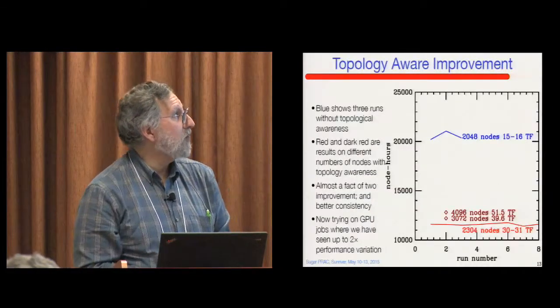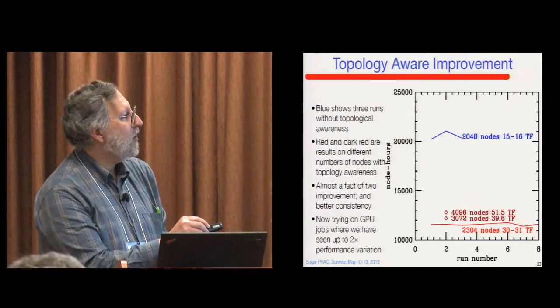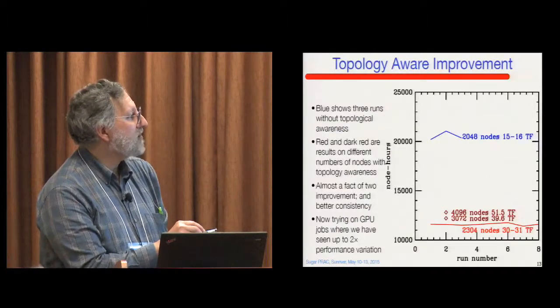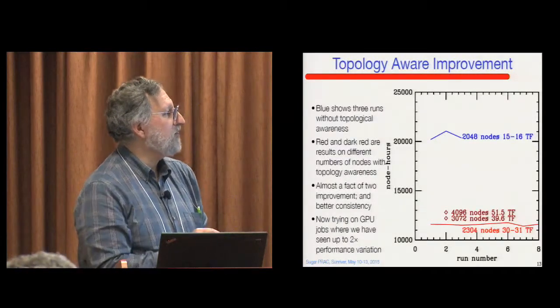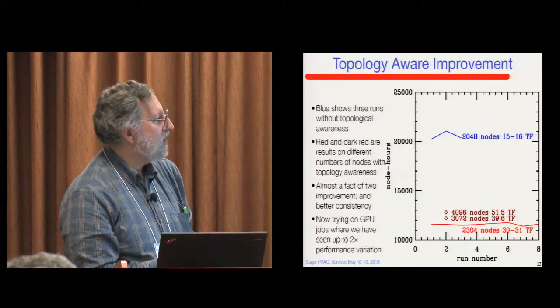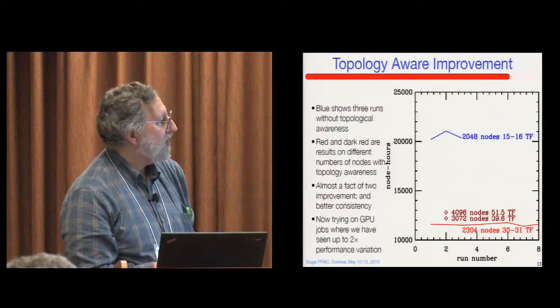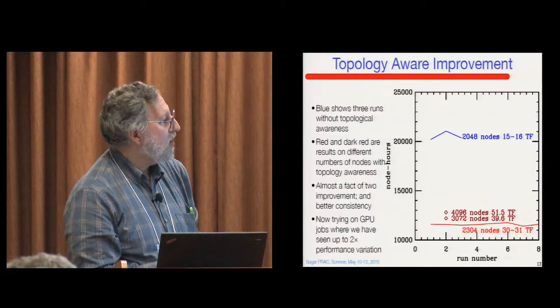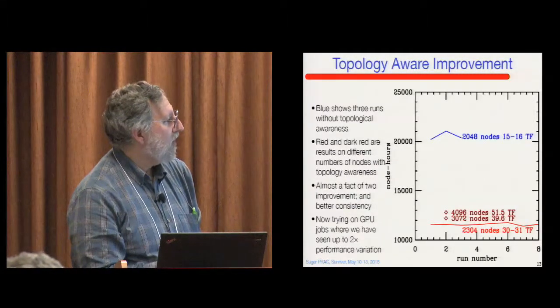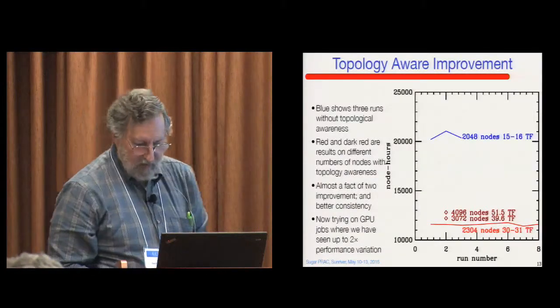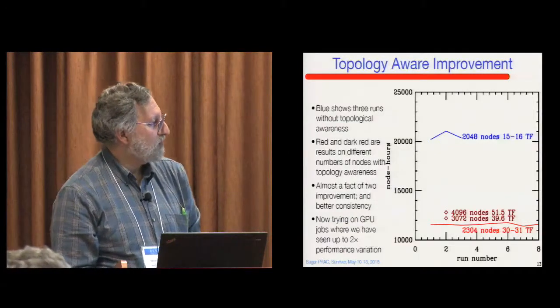So here's the slide about topology aware running. Up here in blue, we see some runs on 2,048 nodes. This is the number of node hours it takes to complete a particular task. So lower down is better. And this shows three different runs in the variation. And the speed of these runs was 15 to 16 teraflops. Then in dark red, we have single runs on two different node sizes, which ran at 51.5 and about 40 teraflops. And then a series of runs on 2,034 nodes. And note how the variation here is larger. This is smoother, which is good. And this is the highest efficiency we've gotten so far in terms of the total number of node hours. And that's running at about 30 teraflops. So we've had almost a factor of two performance improvement on this particular type of code or run. There are other runs which are not quite as dramatic, so I didn't show those.